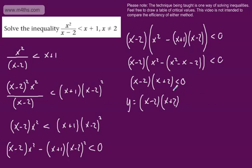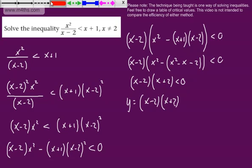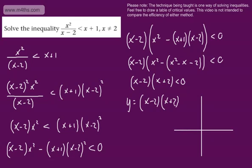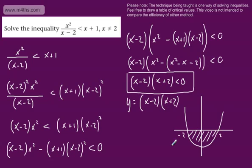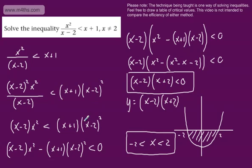We'll graph y equals x minus 2 times x plus 2, with critical values x equals 2 and x equals minus 2. We should recognise this as a difference of squares, so we're going to have a symmetric parabola. We want to know where it is strictly less than 0, and we can see it's strictly less than 0 between the two roots. So x is strictly greater than minus 2 yet in turn strictly less than positive 2. We know x cannot be equal to 2, which is already excluded by the strict inequality.